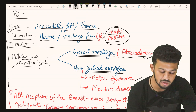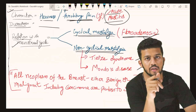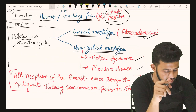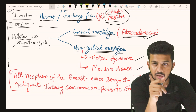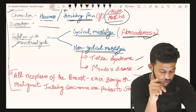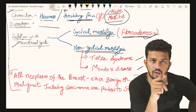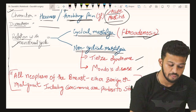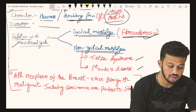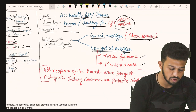In cyclical mastalgia, if there is pain with lump it can be fibroadenosis. In non-cyclical mastalgia it can be Tietze syndrome and Mondor's disease. A key point: all neoplasms of the breast, whether benign or malignant including carcinoma, are painless to start.